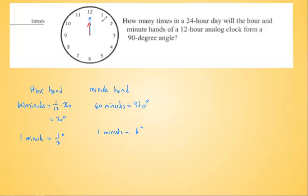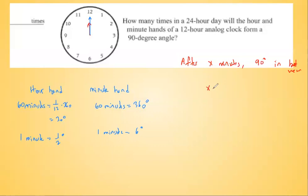Let's say this happens the first time after X minutes. They will have a 90-degree angle between them. In one minute the hour hand moves one-half degree, so in X minutes it moves X/2 degrees. The minute hand moves six degrees per minute, so in X minutes it moves 6X degrees.